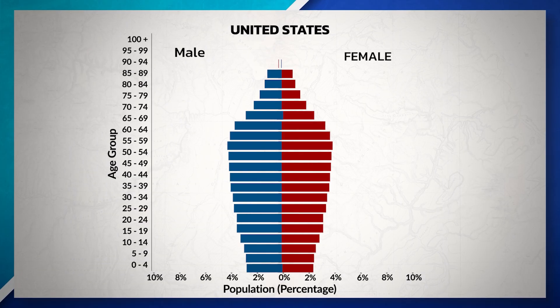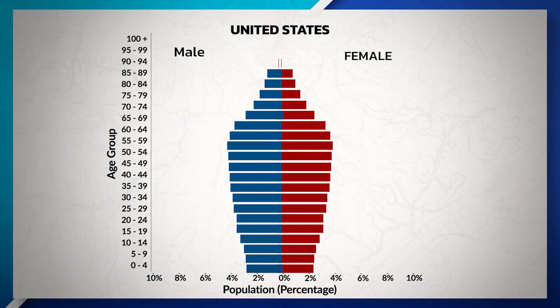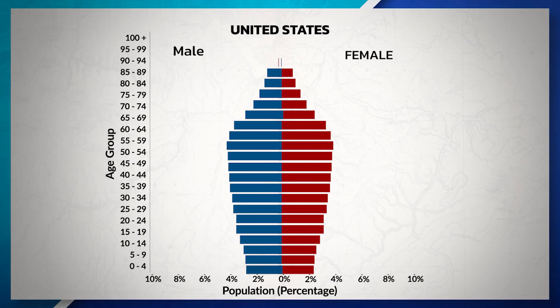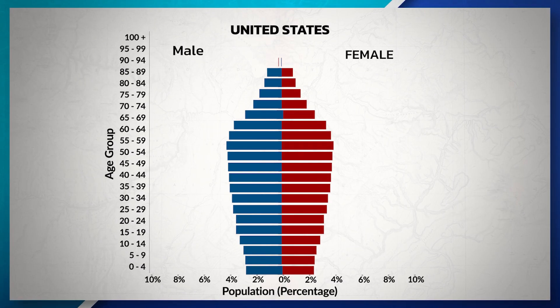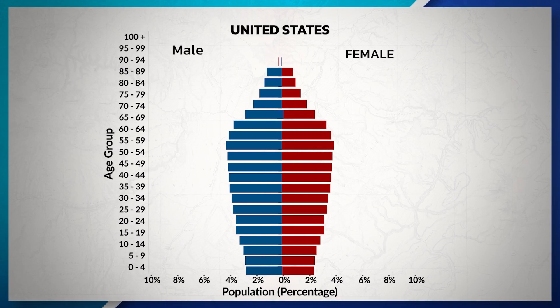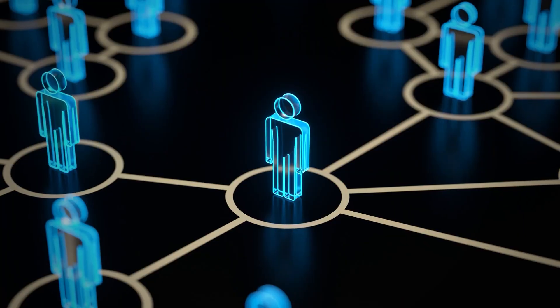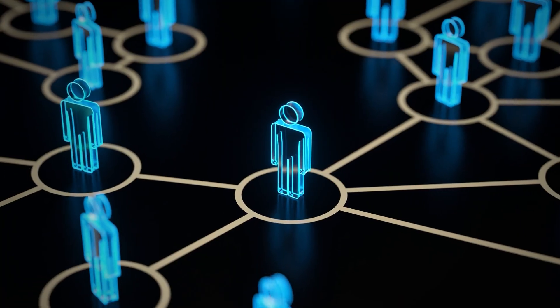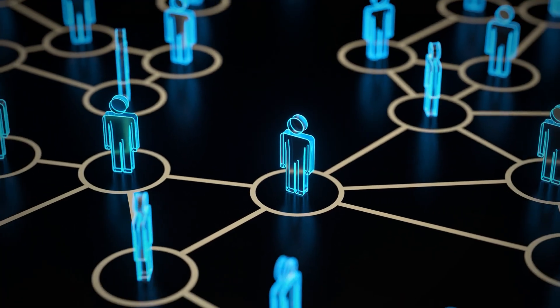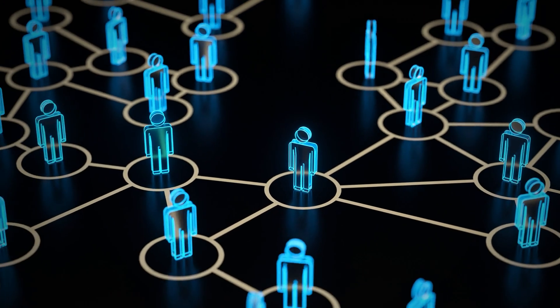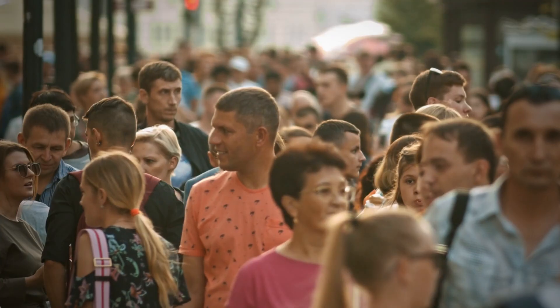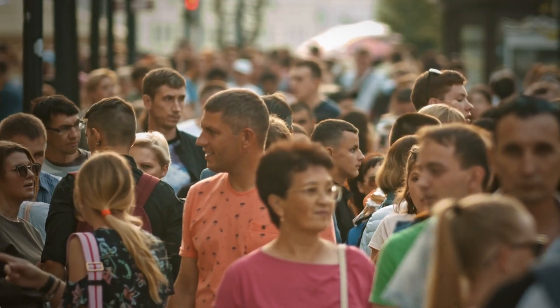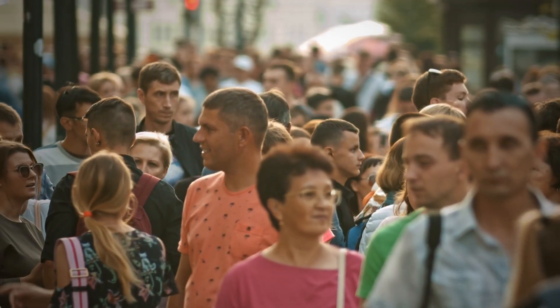In the United States, we can see that the population is distributed more evenly throughout the different age ranges, indicating that the country is in Stage 4 of the demographic transition model. Here we can see that the country most likely has a zero population growth, resulting in a stable or unchanged population size.